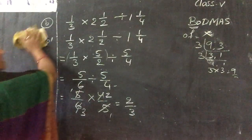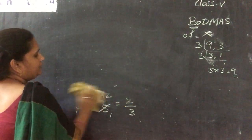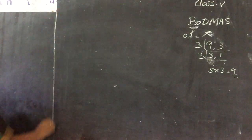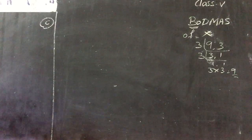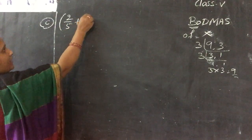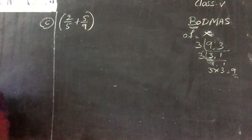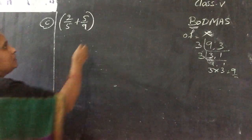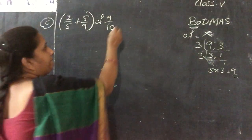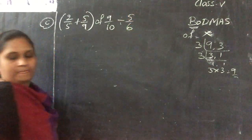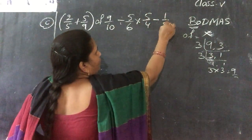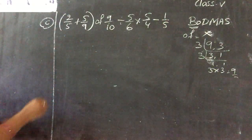Next is sum C: (2/5 + 5/9) of 9/10 ÷ 5/6 × 5/4 − 1/5. Sums D, E, and F you have to do on your own based on this explanation.